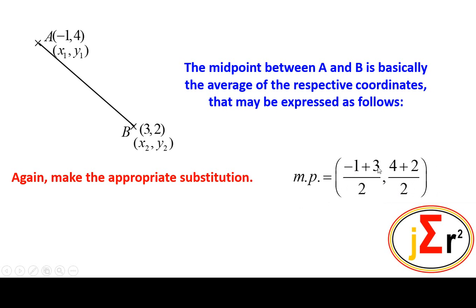Negative 1 plus 3, that's 2. 2 divided by 2, that will give us 1. And 4 plus 2, that's 6. 6 divided by 2 will give us 3. The midpoint will therefore be 1, 3.